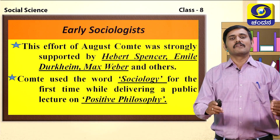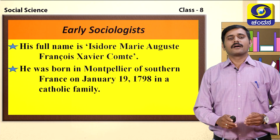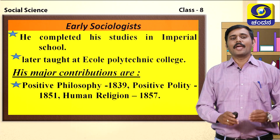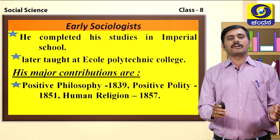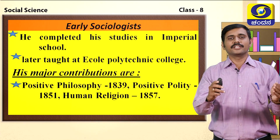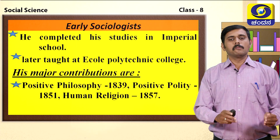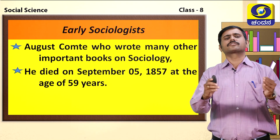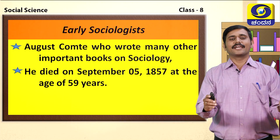His full name is Isidore Mary Auguste François Xavier Comte. He was born in Montpellier of Southern France on January 19, 1798, in a Catholic family. He completed his studies at Imperial School and later at École Polytechnique College. His major contributions include Positive Philosophy (1839), Positive Polity (1851), and Human Religion (1857). Auguste Comte died on September 5, 1857, at the age of 59 years.